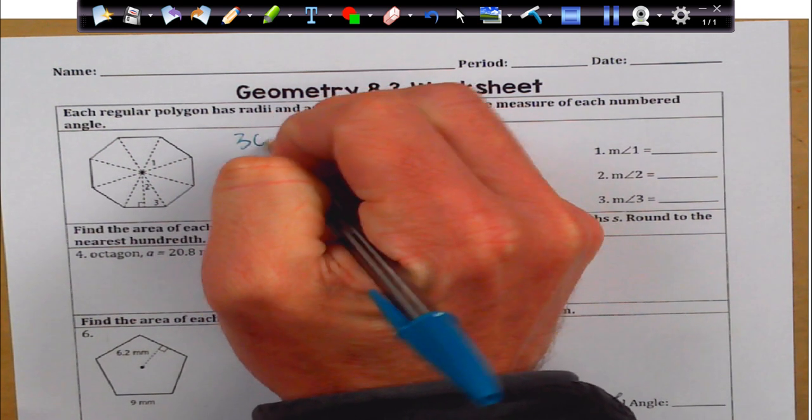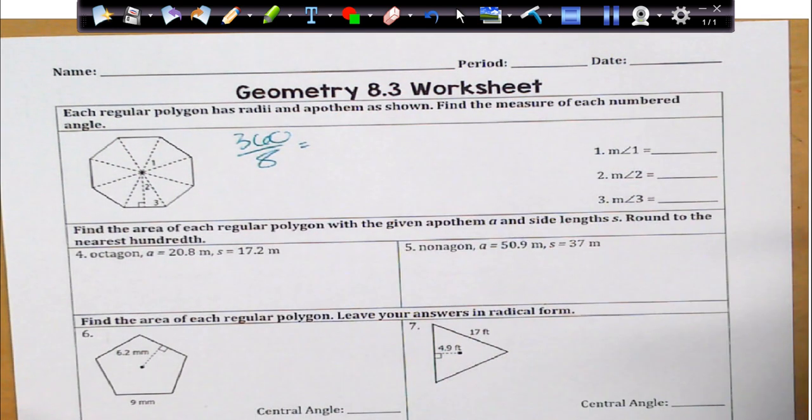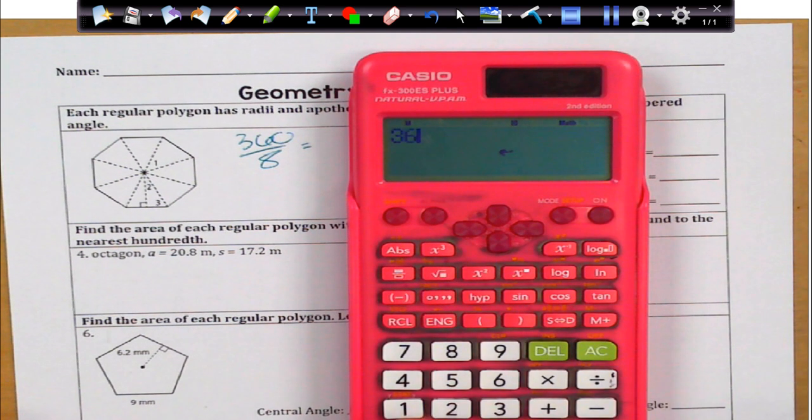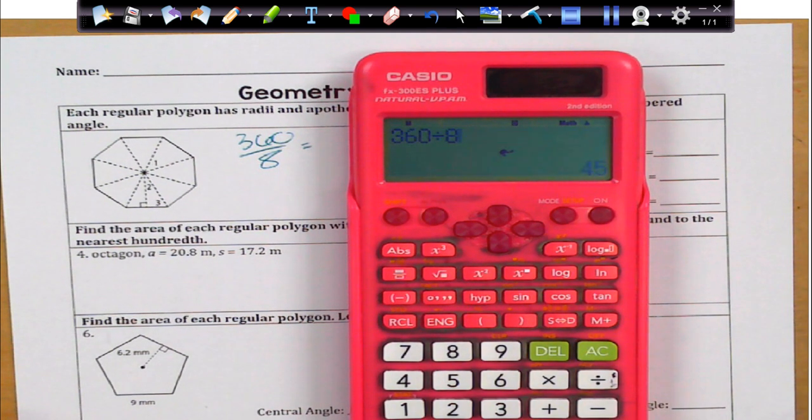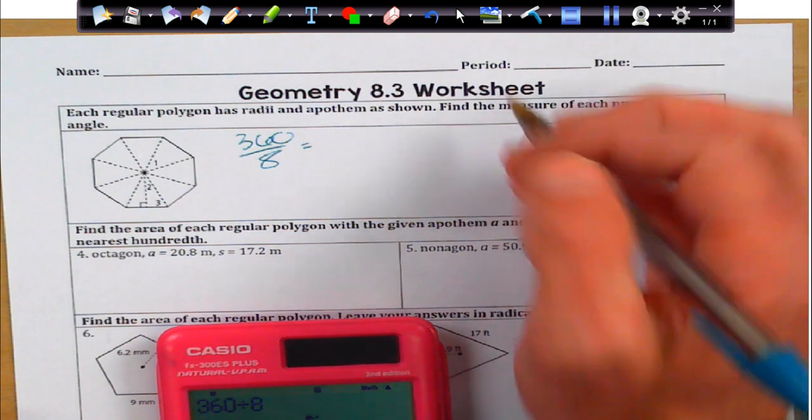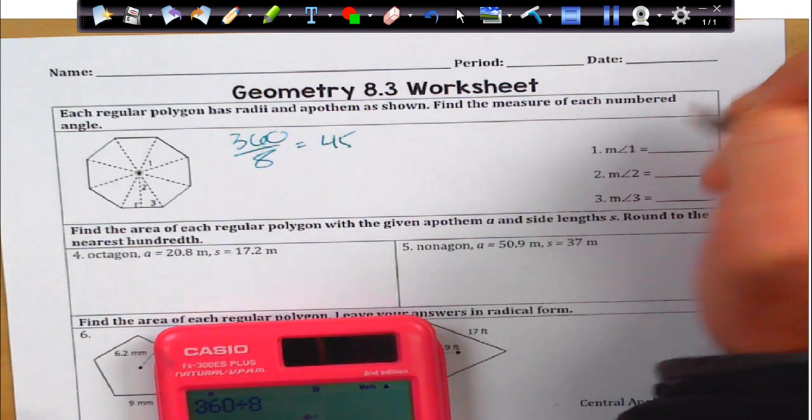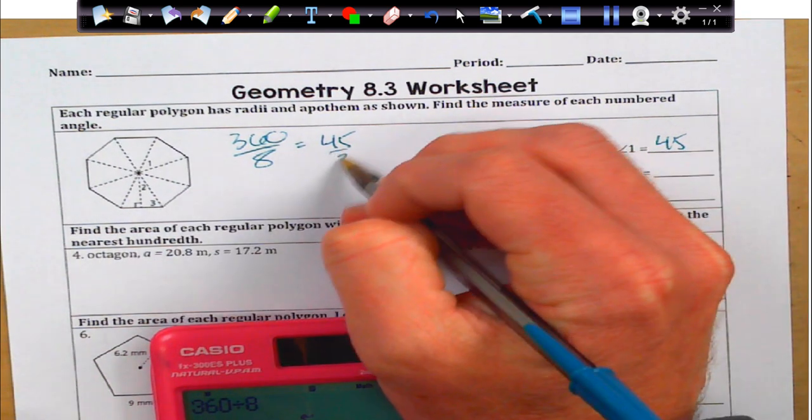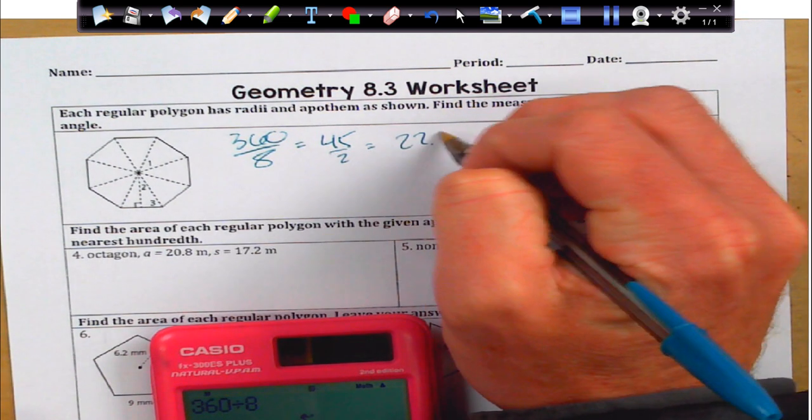So, to find the central angle, we're going to do 360 divided by 8. Take your trusty, rusty calculator. Mine's not rusty because it's made out of plastic. 45 degrees is my central angle. The apothem right here is going to cut that in half. So, if I cut that in half, I'm going to get 22.5.